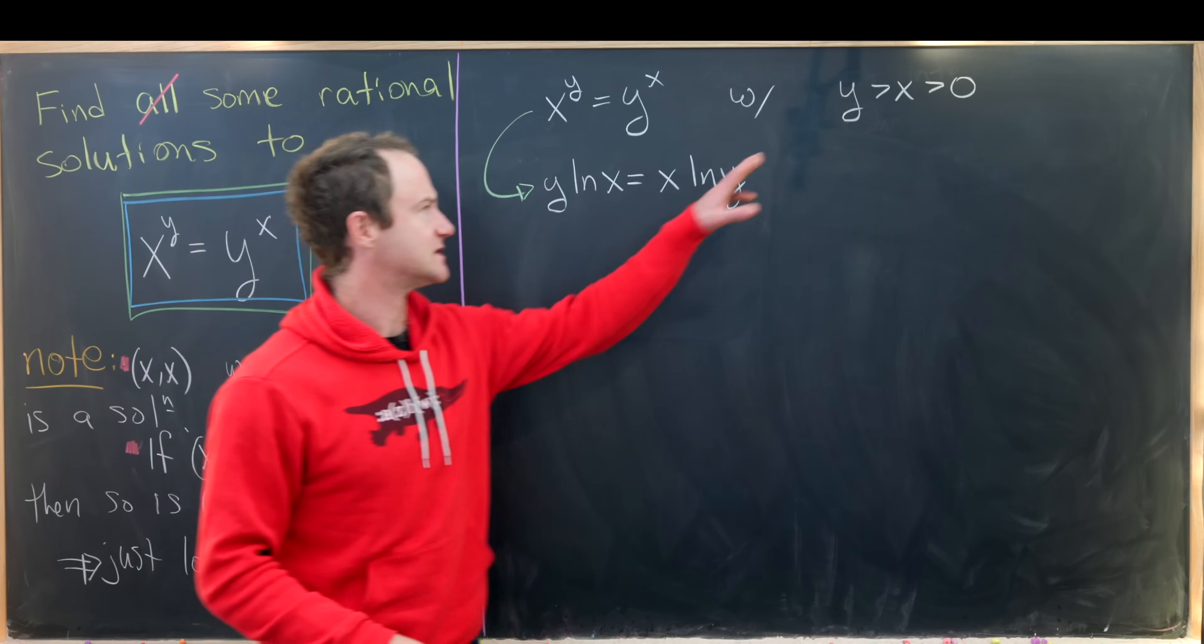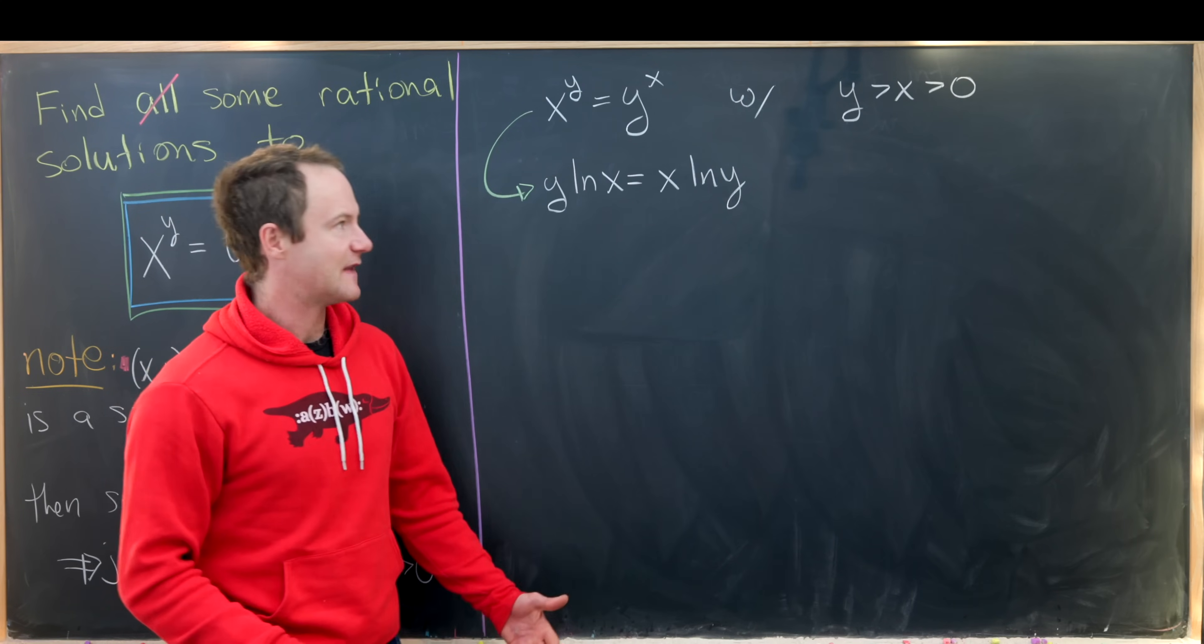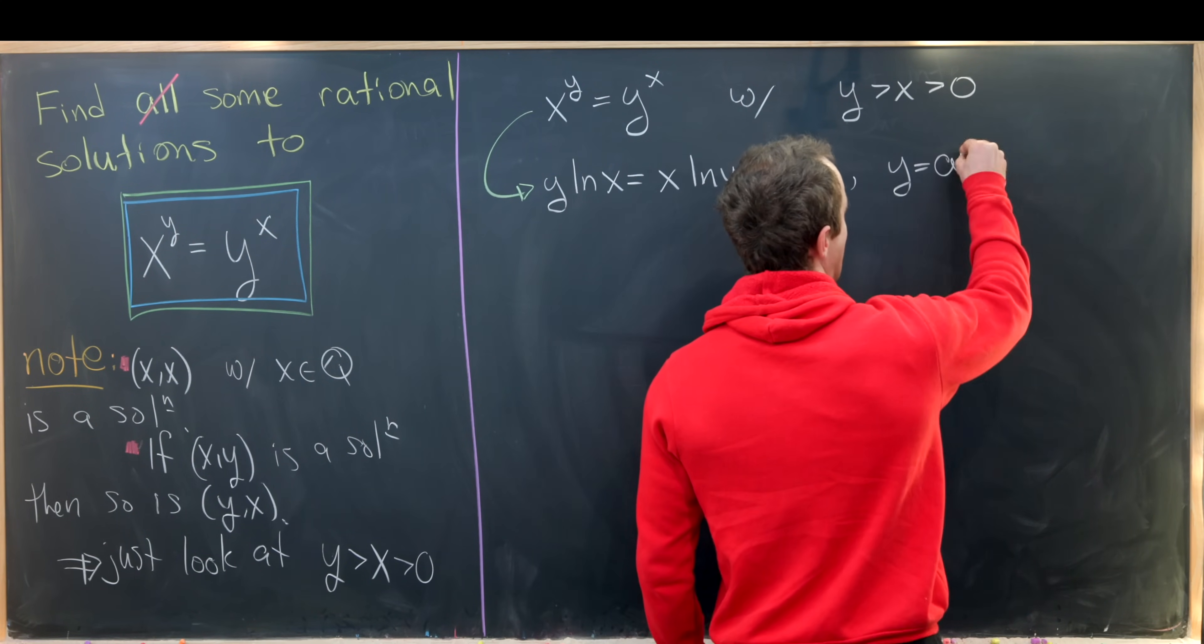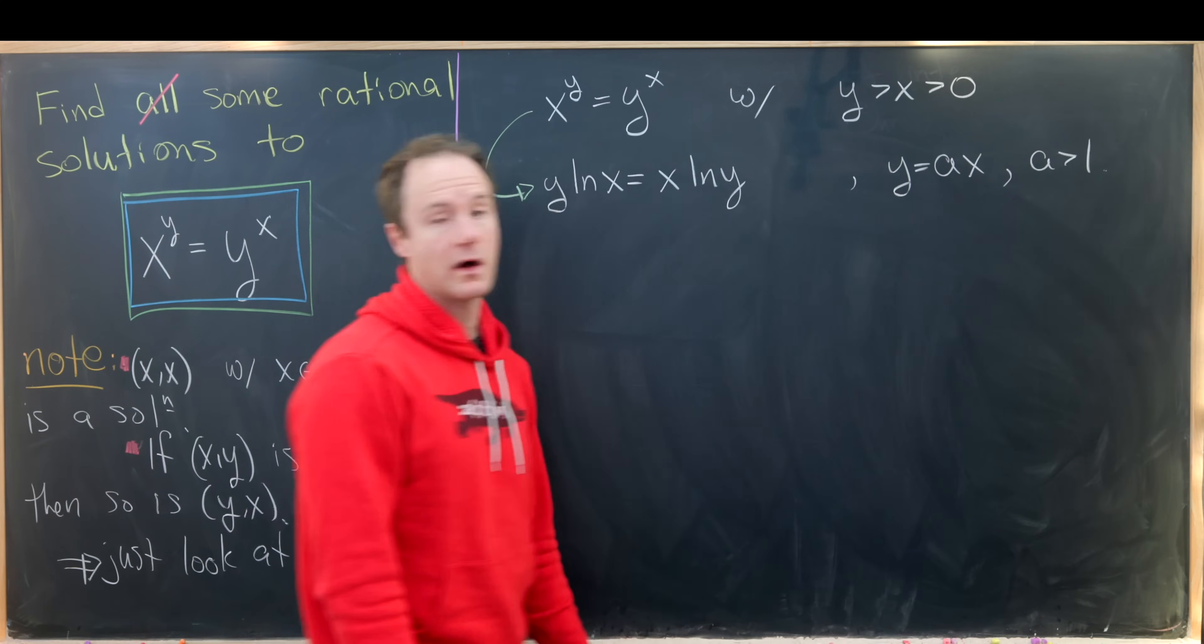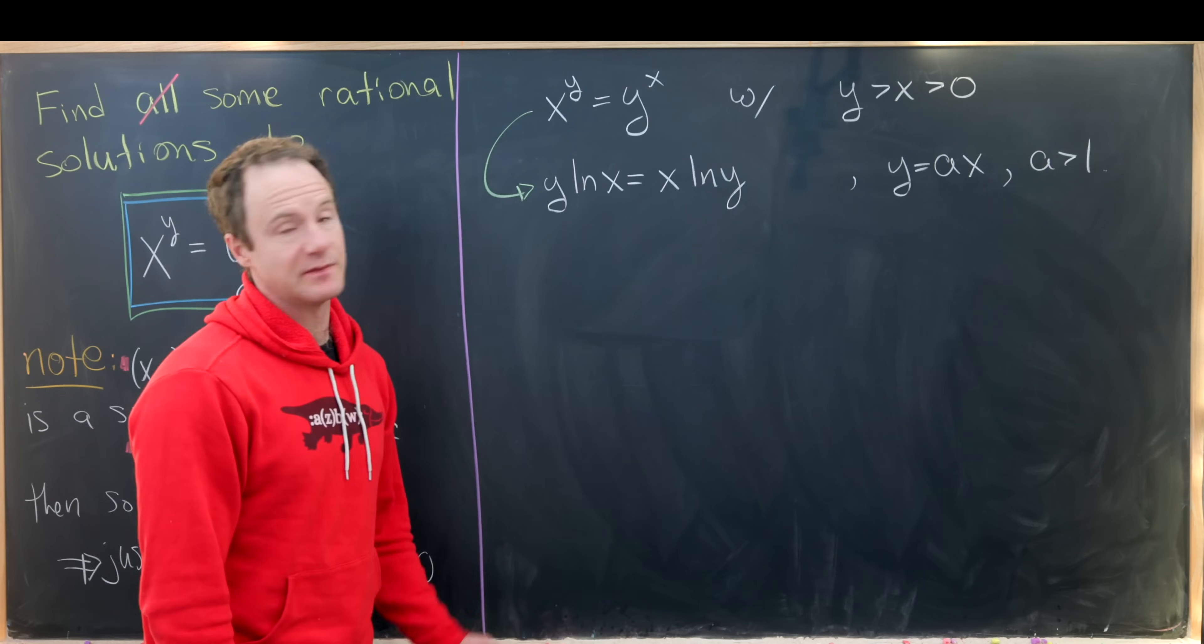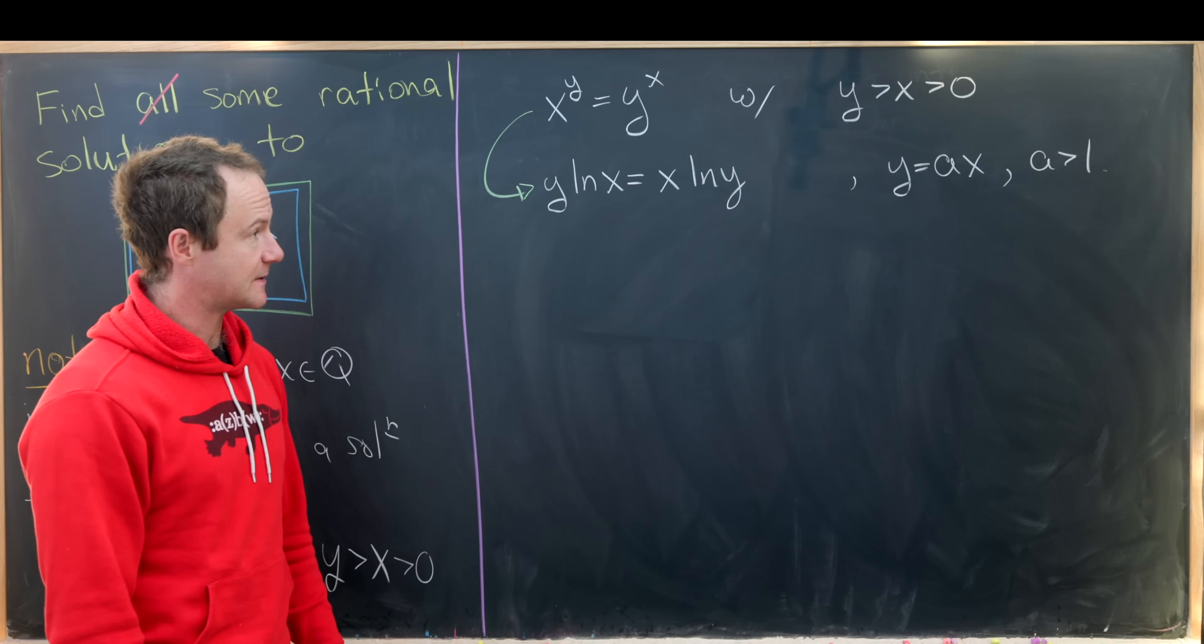Now I'm going to use a little bit of a trick using the fact that y is bigger than x. That means that y can be rewritten as a times x where a is bigger than one. Again, what is a? Well, it's just going to be y over x, which is clearly bigger than one given this inequality.